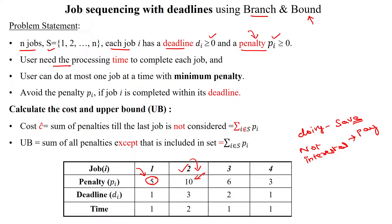The user needs processing time to complete each job, and the job must be completed within its deadline. The goal is to complete jobs while avoiding the penalty amount, or otherwise minimize the penalty. The branch and bound technique tries to minimize the penalty by selecting and avoiding jobs, and to avoid penalty, job i must be completed within the deadline.